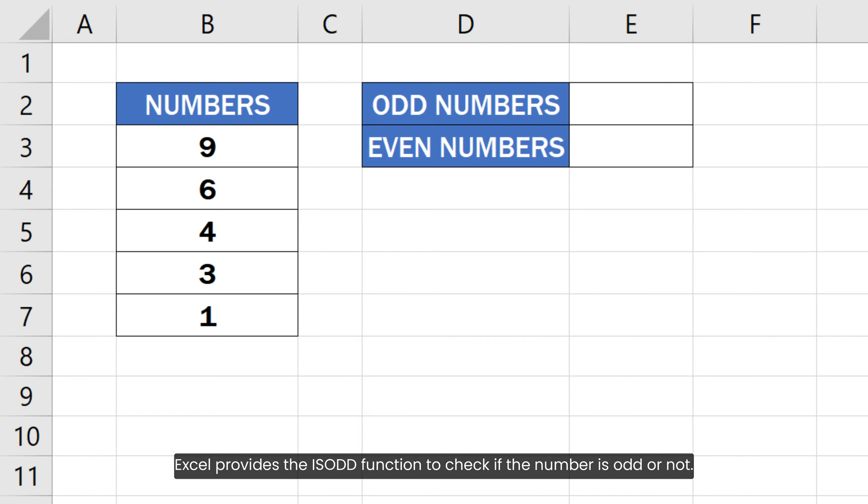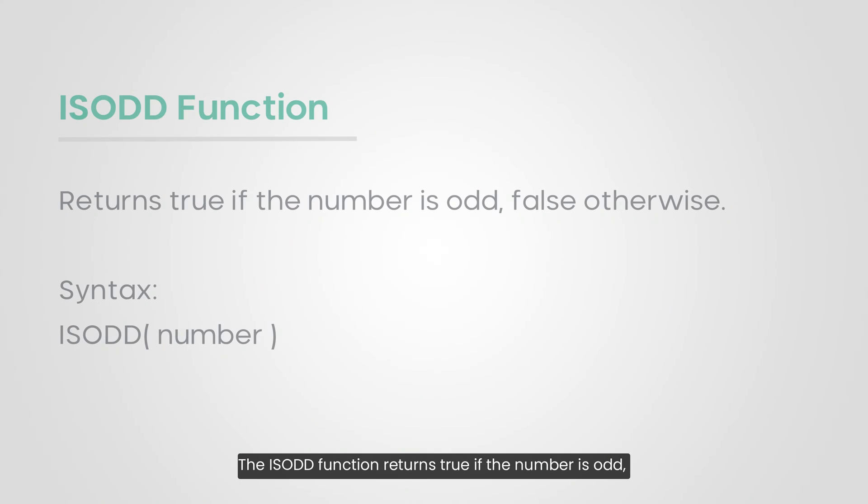Excel provides the ISODD function to check if the number is odd or not. The ISODD function returns true if the number is odd. It returns false if the number is not odd. It accepts only one argument, which is the number we want to test.